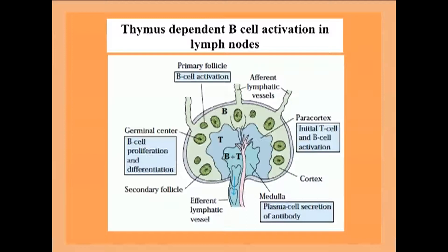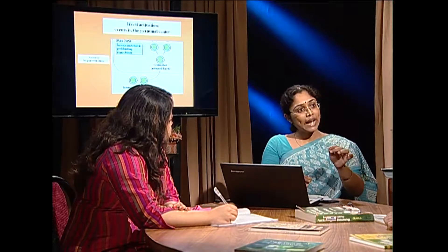The lymph node can be divided into three parts: the outer cortex, the middle paracortex, and the innermost medulla. In the cortex, B lymphocytes are arranged in concentric circles called primary follicles. B-cell activation takes place in those follicles. Once a B cell encounters an antigen, it engulfs and processes it, signifying that the B cell is getting activated.